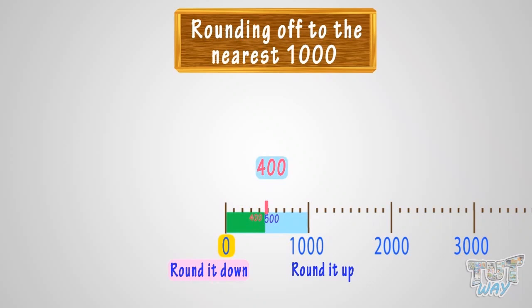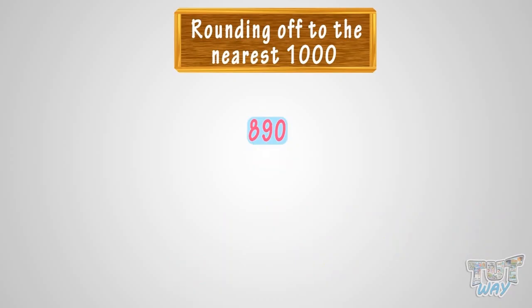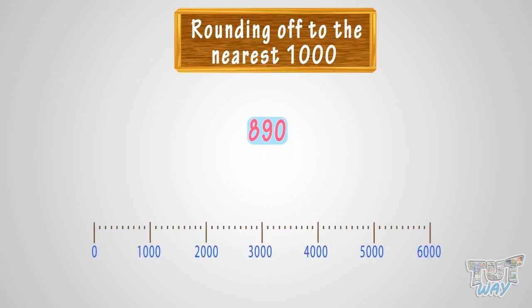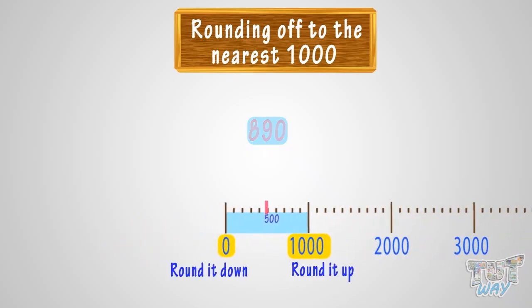Let's take the next number: 890. We have to round 890 to the nearest 1000. See the number line — where can you fit 890? It is somewhere between 0 and 1000. 890 is above or after the 500 mark, so we will round it up to 1000.